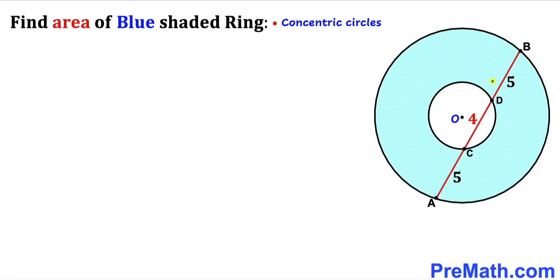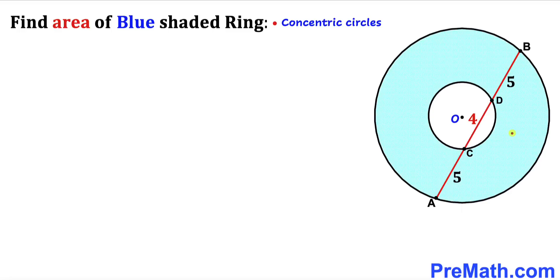Welcome to PreMath. In this video we have got two concentric circles with a common center O, and as a result we get this blue shaded ring. Moreover, this chord AB has been divided into three segments: segment AC is five units, segment CD is four units, and segment BD is five units as well. Our task is to find the area of this blue shaded ring.